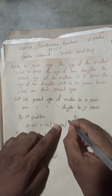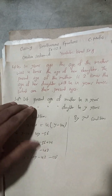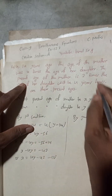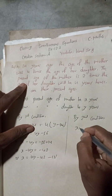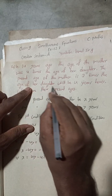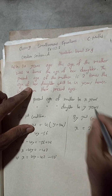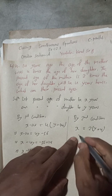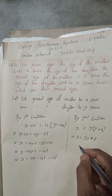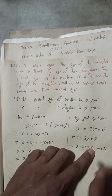By the second condition: the present age of the mother is 2 times the age her daughter will be 4 years hence. So X = 2 times (Y plus 4), which gives X = 2Y plus 8. This implies X minus 2Y = 8. This is equation 2.